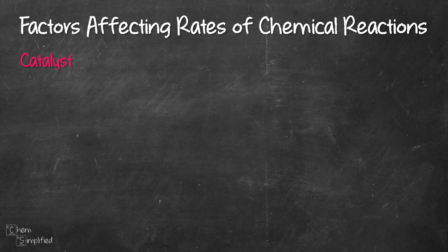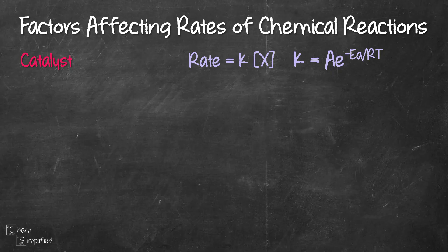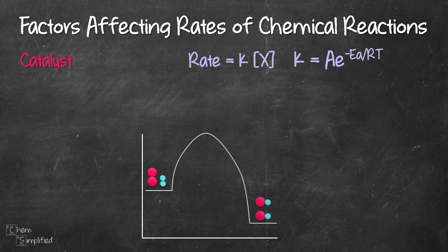Now on to our final factor, which is the catalyst. The role of a catalyst is to lower the activation energy of the reaction without getting consumed. In a regular chemical reaction without any catalyst, it requires a certain amount of energy for that reaction to occur — that certain amount of energy is the activation energy, Ea.